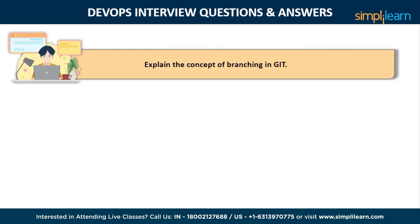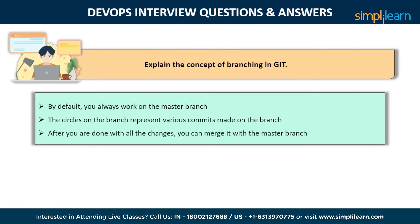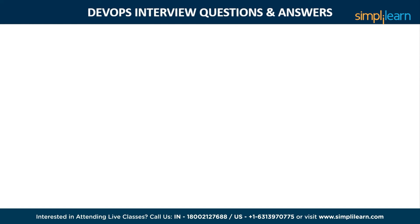Explain the concept of branching in Git. Suppose you are working on an application and you want to add a new feature to the app. You can create a new branch and build the new feature on that branch. By default, you always work on the master branch, and the circles on the branch represent various commits made on the branch. After you are done with all the changes, you can merge it with the master branch.